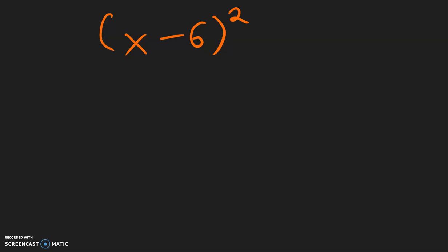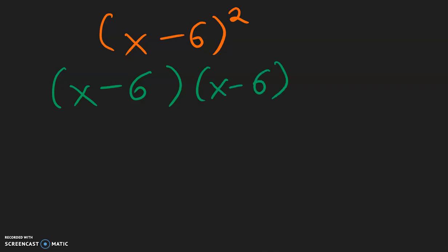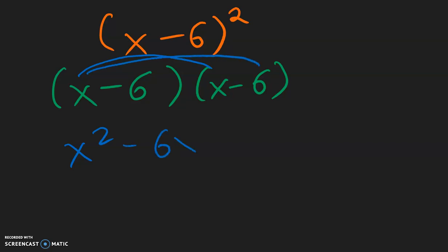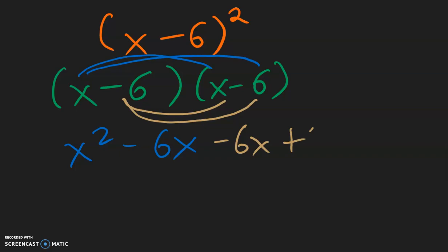Here we have x minus 6 squared, which means we have x minus 6 multiplied by x minus 6. We get x squared. x times negative 6 is negative 6x. Negative 6 times x is negative 6x. And negative 6 times negative 6 is positive 36.